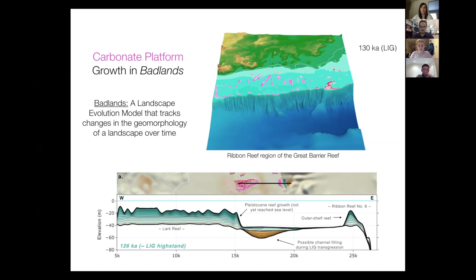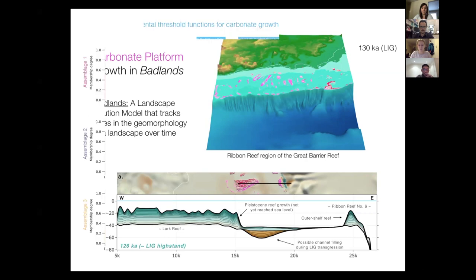I'll just show a quick animation of what one of these models looks like. Here, I was looking at changes in sea level and you can see the reefs — those bright pink areas — turning on and growth starting. On the right, it's highlighting the erosion and deposition that's basically driving the landscape changes in the model, and you can see the rivers and fluvial system.